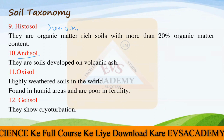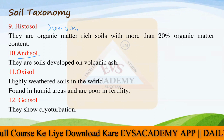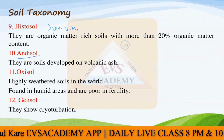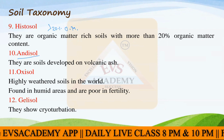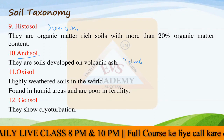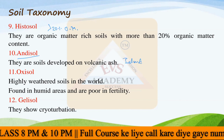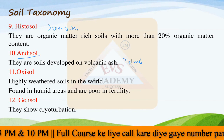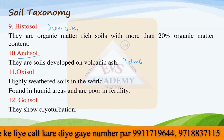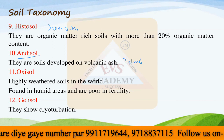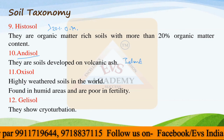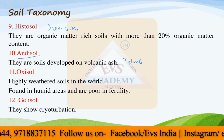The next soil order is Andisols. Andisols are soils developed on volcanic ash, so these are generally found in island regions. In India, a very small amount of Andisols can be found in the Andaman and Nicobar Islands. No Andisols can be found majorly in the Indian subcontinent - you can only find them in the Andaman and Nicobar Islands.